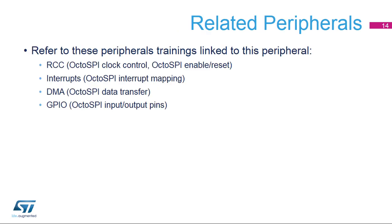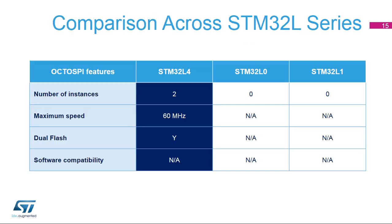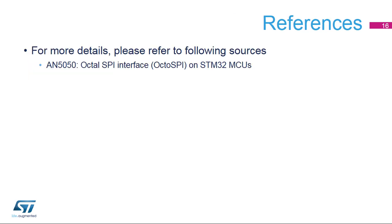You can refer to peripheral training slides related to RCC, interrupts, DMA, and GPIO for additional information. OctoSPI is an exclusive feature of the STM32L4R among the STM32L series. For more details, please have a look into application note AN5050 about the OctoSPI interface.